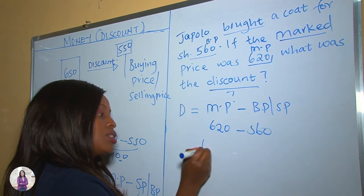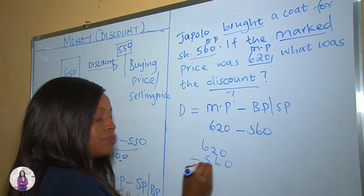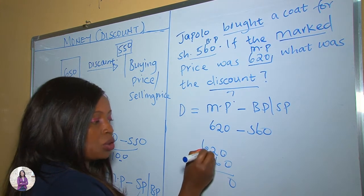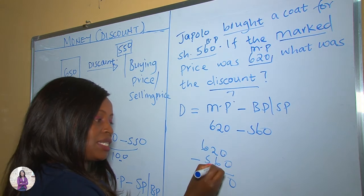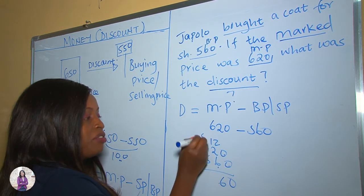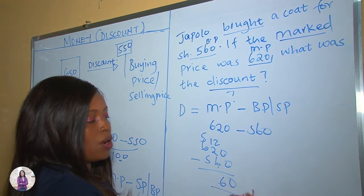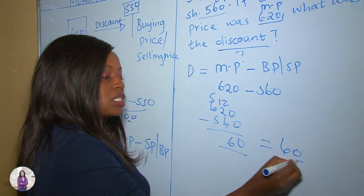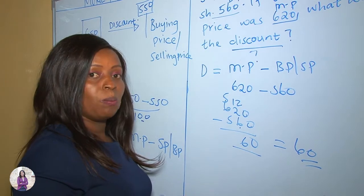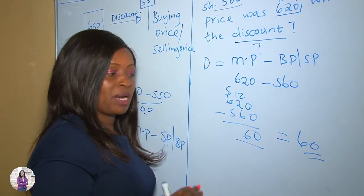Let's subtract: 620 minus 560. Zero minus zero is zero; we borrow because 2 cannot take away 6, so 12 minus 6 is 6; then 5 minus 5 is 0. Therefore the discount was 60 shillings, meaning the person bought the coat 60 shillings less than the marked price.